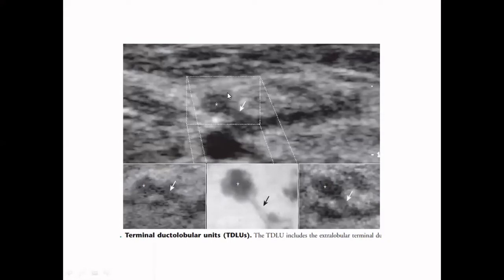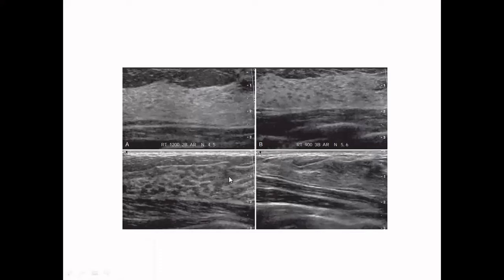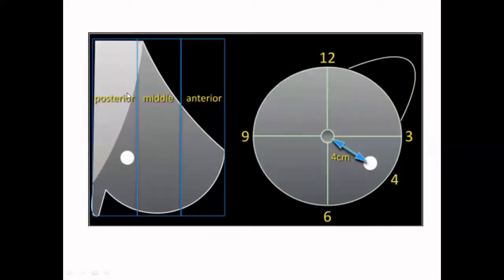On ultrasound, terminal ducto-lobular units (TDLUs) commonly appear as hypoechoic elements. Their appearance varies from patient to patient. While reporting on ultrasonography, divide the breast into anterior, middle, and posterior parts. When reporting a lesion, measure the distance from the nipple, give the o'clock position, and state the orientation of the transducer when the image was acquired — for example, 'lesion in the posterior part, 4 centimeters from the nipple at 4 o'clock position.'